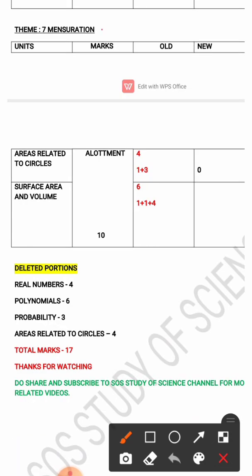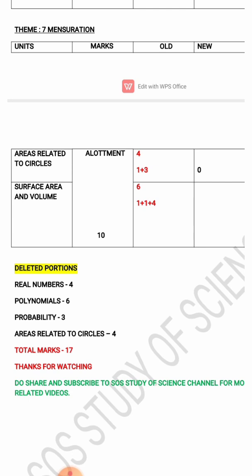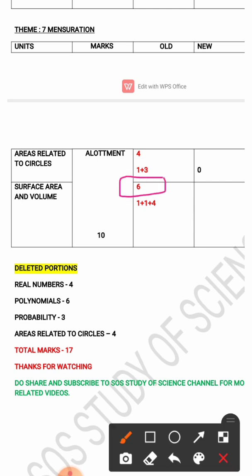Theme 7 is Mensuration. The lessons under this theme are Areas Related to Circles and Surface Area and Volume. The total marks allotment is 10. In the previous year's paper, Areas Related to Circles had 4 marks allotted, but this year as this lesson is deleted, there will be no marks allotment for it. For Surface Area and Volume, 6 marks were allotted — 2 questions for 1 mark and 1 question for 4 marks.